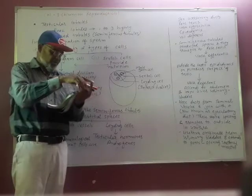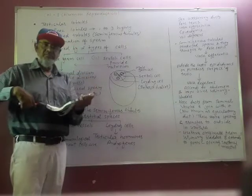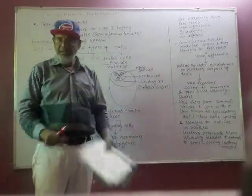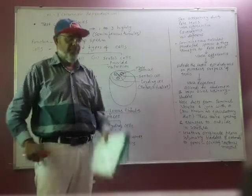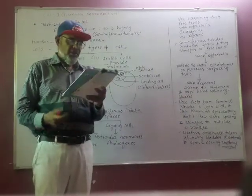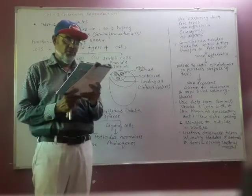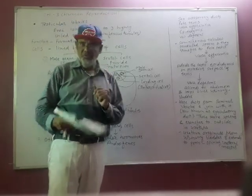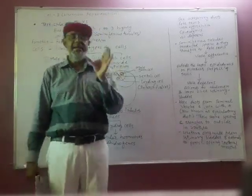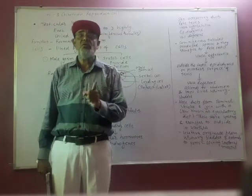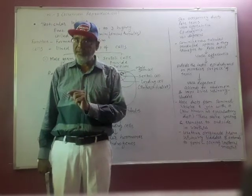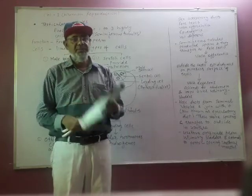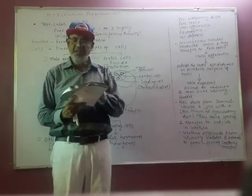Let's go further. Look at page number 43, paragraph 7. Each lobule contains 1, 2, 3 highly coiled seminiferous tubules. What we have studied is that each testis has about 250 lobules. Those lobules are known as testis lobules.